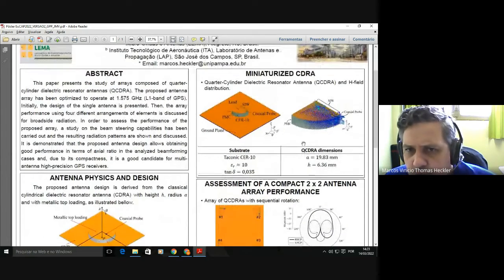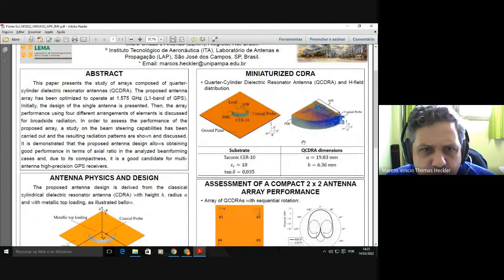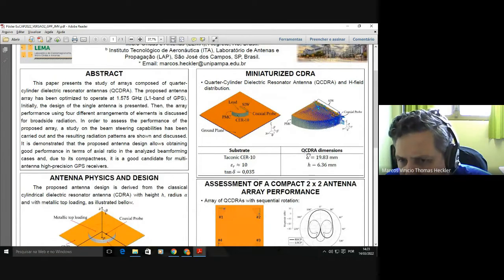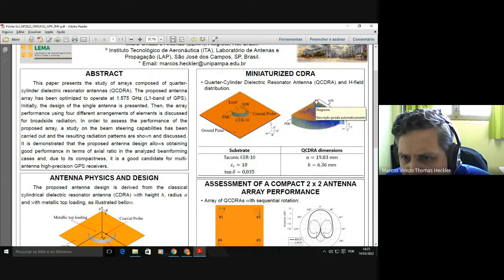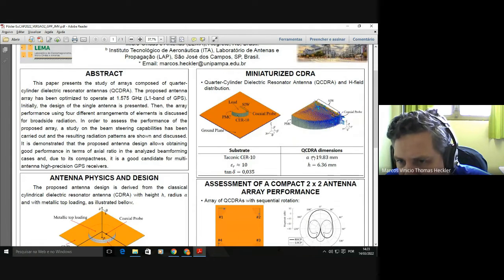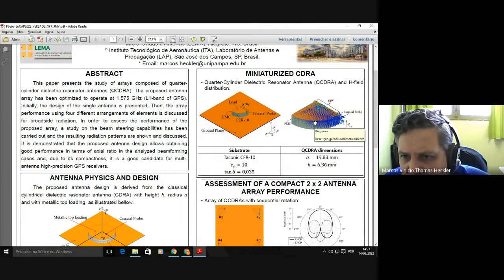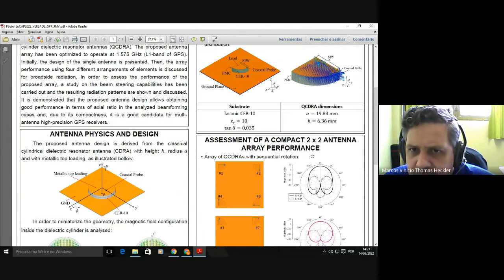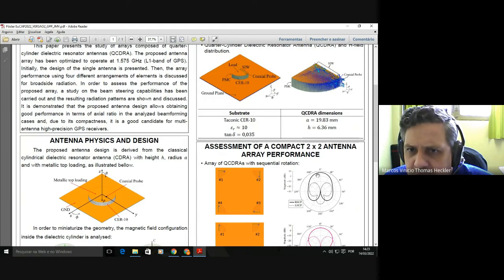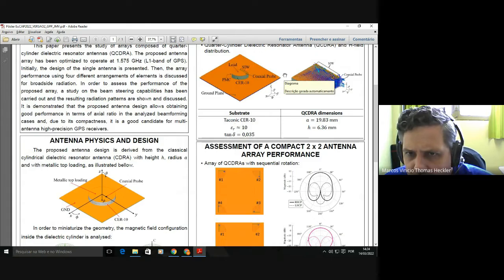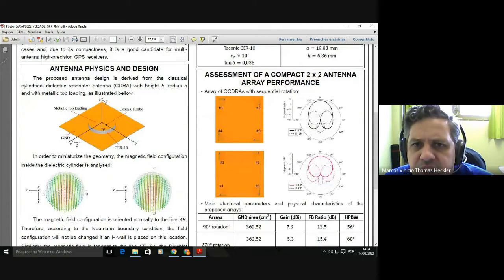In order to act as an antenna for GPS applications, the radius that has been optimized is 19.83 millimeters, and the height of this dielectric is 6.36 millimeters. This antenna has been used to compose a 2x2 array in order to allow beamforming applications. We have here tested one configuration and then we got a relatively high directive radiation pattern.